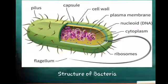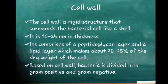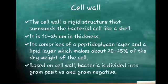A capsule layer is present as the outermost layer of the cell wall. The cell wall is a rigid structure which surrounds the bacterial cell like a shell.